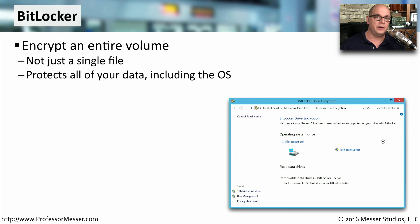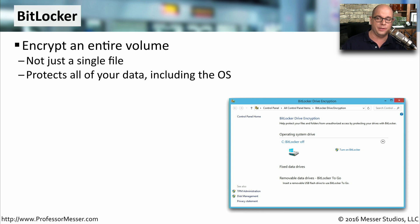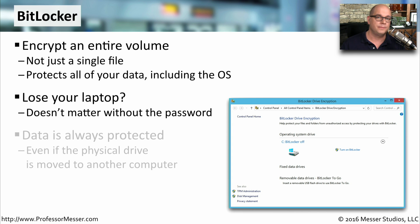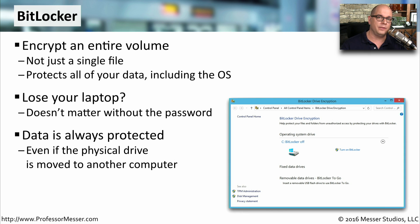Some editions of Windows provide a feature called BitLocker, which allows you to encrypt an entire volume of information. This includes all of your data files, the operating system, and anything else that's on this volume. That means if you lose your laptop or somebody takes your hard drive, they would not have access to this data unless they had your authentication credentials. Since you are encrypting everything on a volume, you could even remove the drive from a computer, put it into another computer, and all of that information would still remain encrypted.